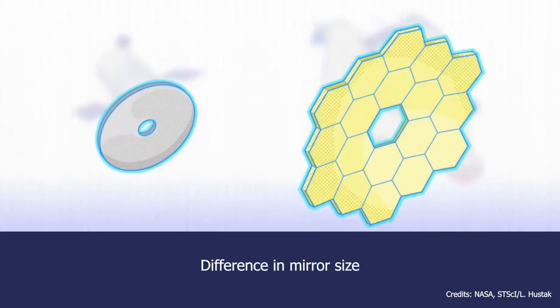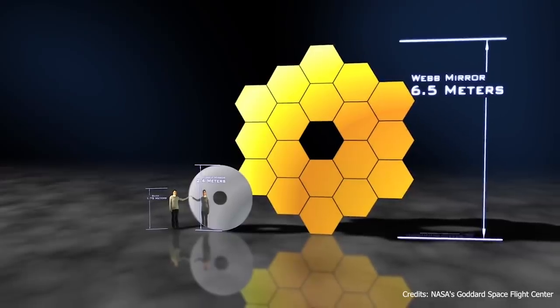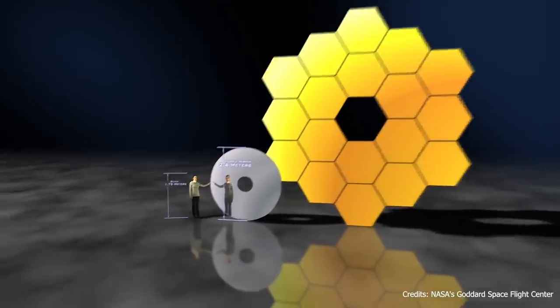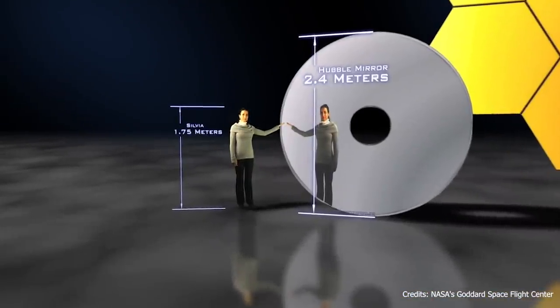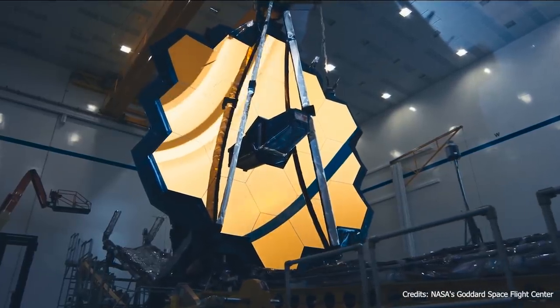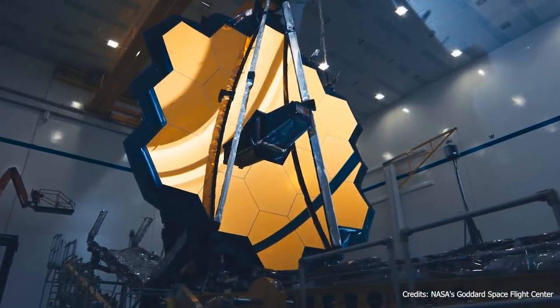Second, Webb has a much bigger mirror, 6.5 meters in diameter versus Hubble's 2.4 meters. Larger light-collecting area will allow James Webb to peer much farther into space.